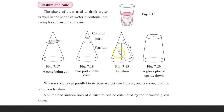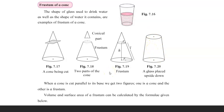The Frustum has height H and slant height L. A glass placed upside down is a perfect example of a Frustum. When a cone is cut parallel to its base, we get two figures: one is a cone and the other is the Frustum.